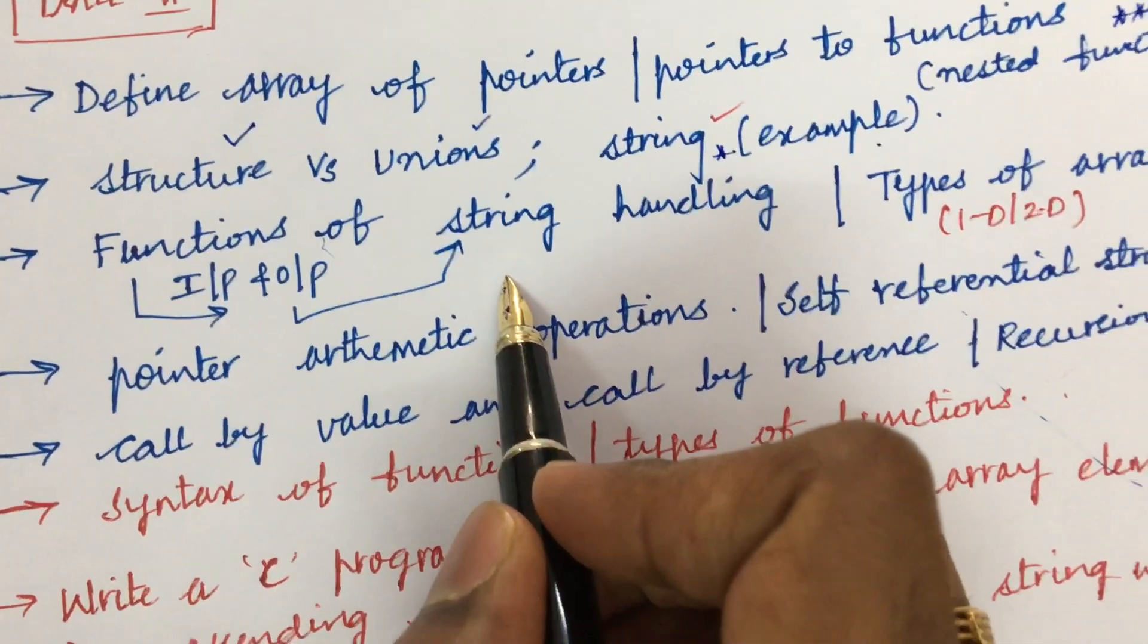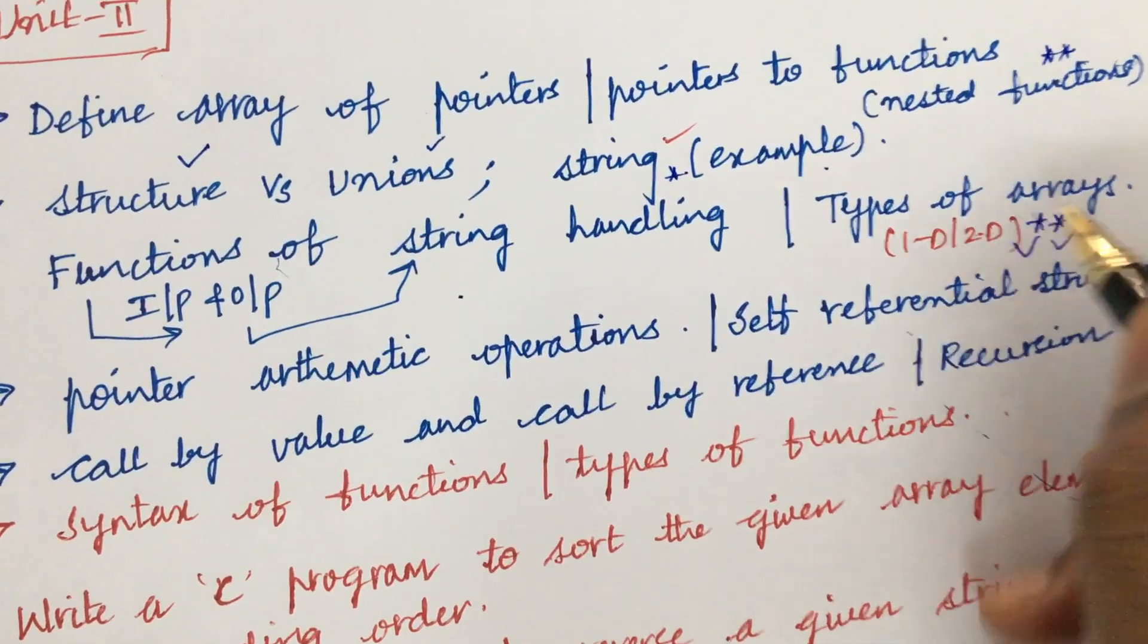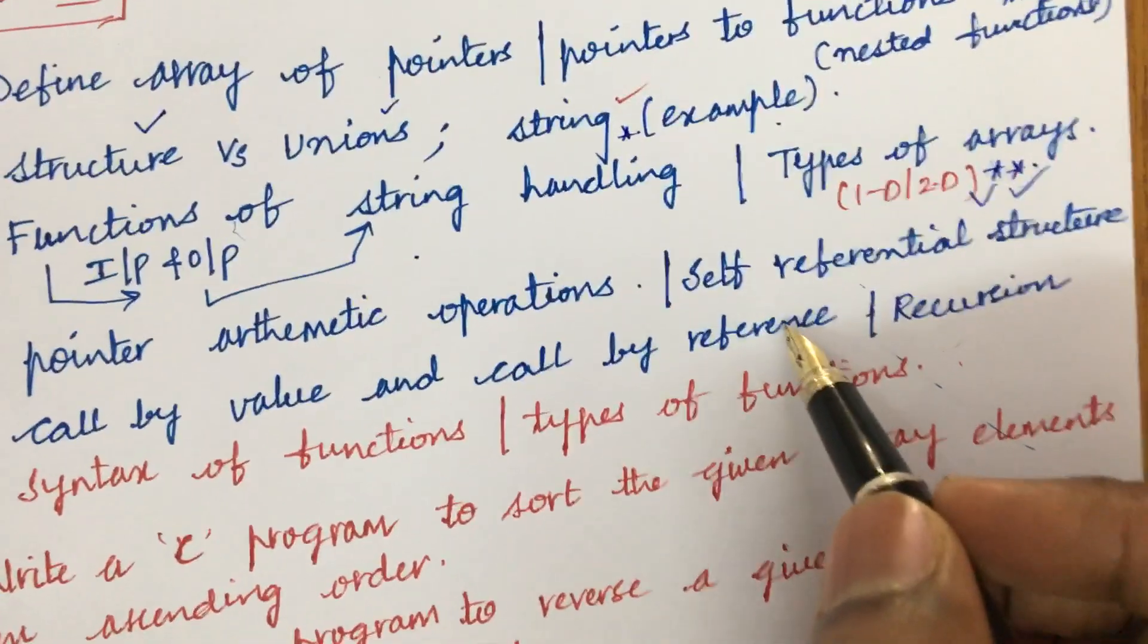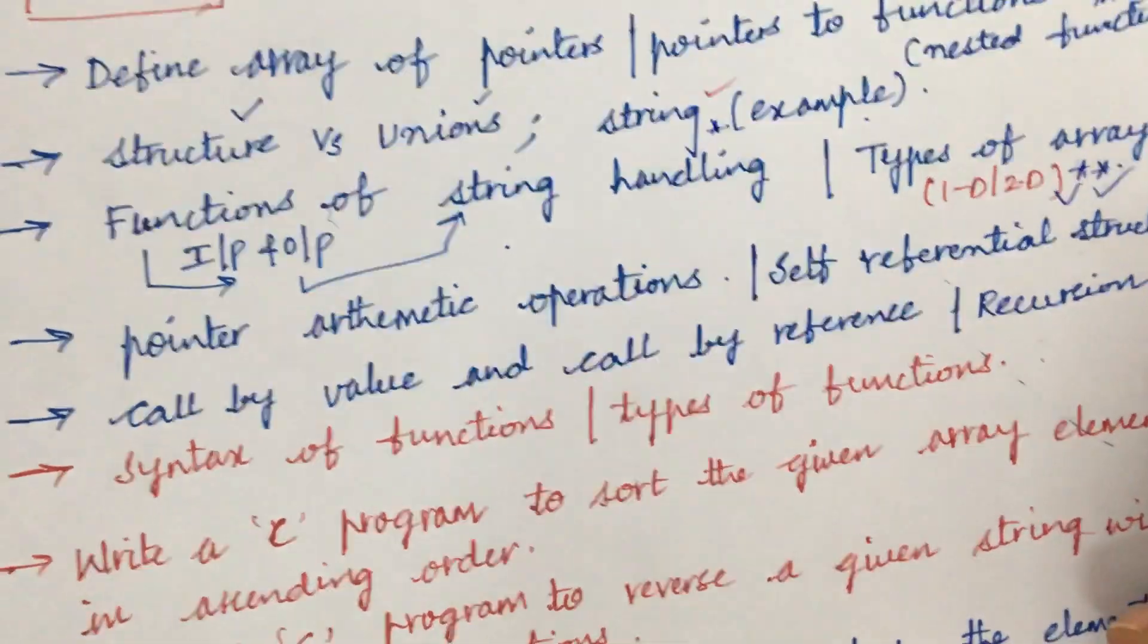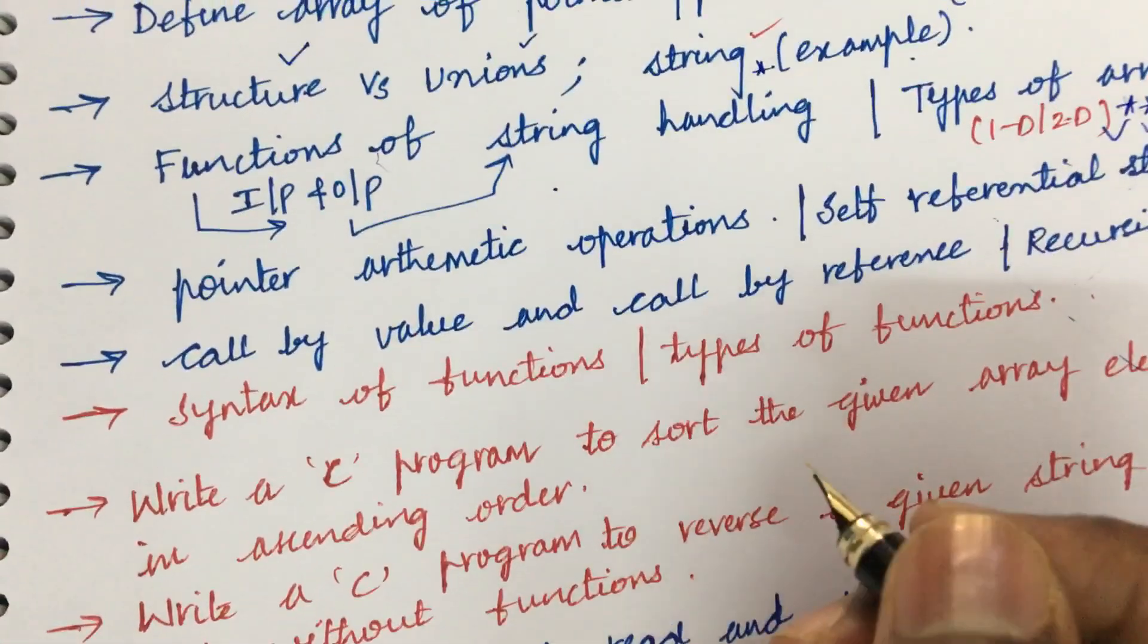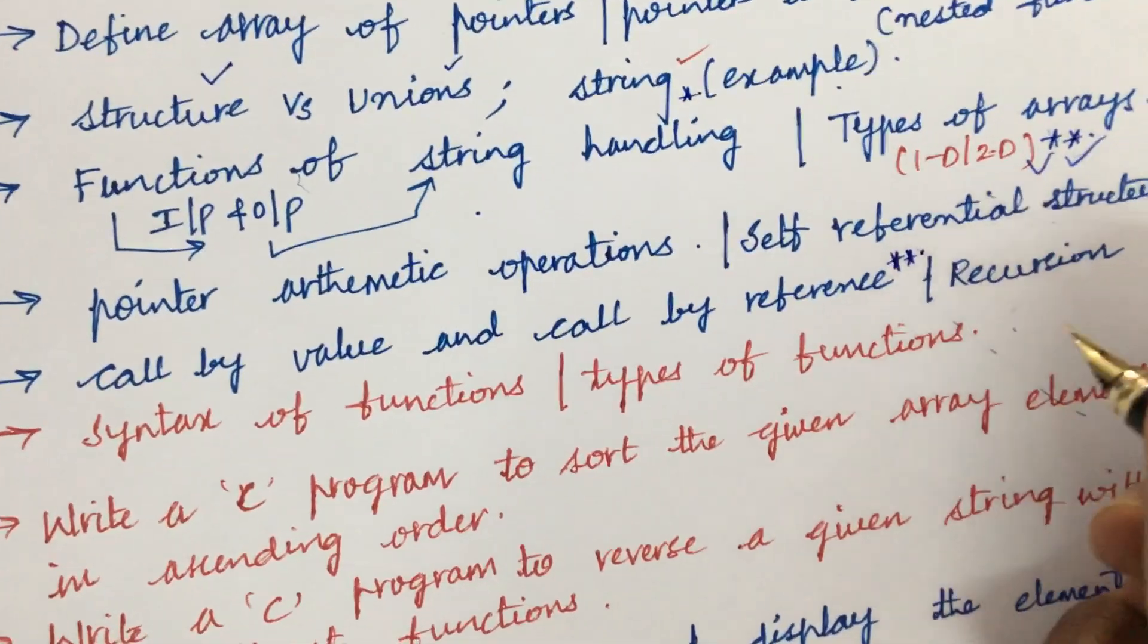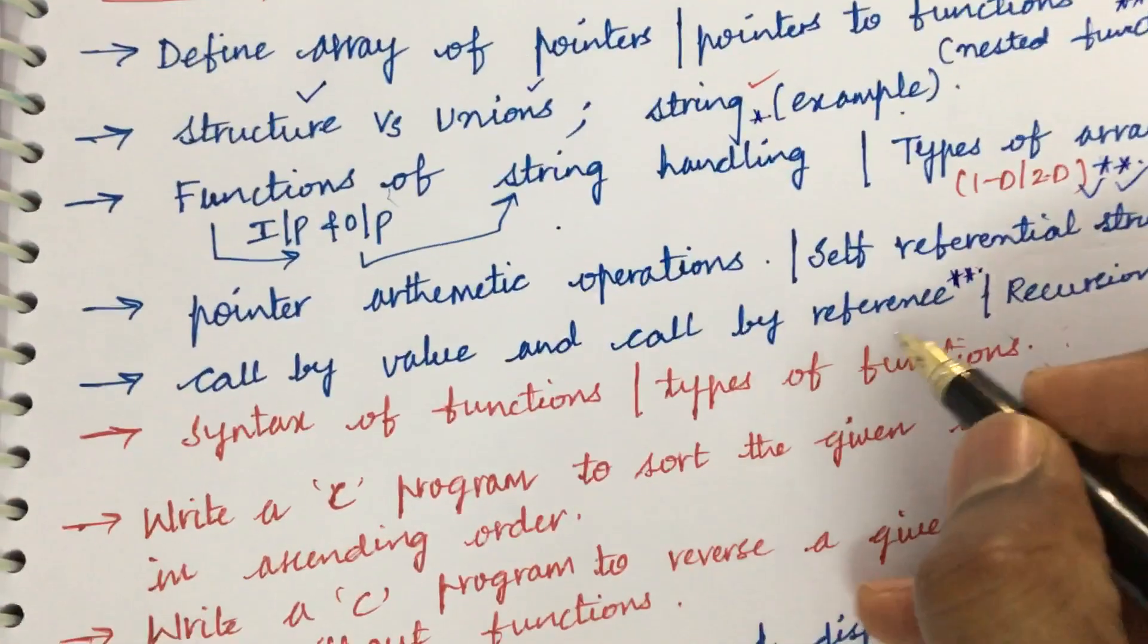Examples and functions of string handling and input-output functions of a string is very important. Types of arrays and the 1D, 2D type is also very important and based on this a program will be asked. Pointer arithmetic operations as well as self-referential structure related to the structure - you need to be perfect with all the concepts. Call by value as well as call by reference is also asked several number of times and that is said to be a highlighted question and about the recursion, syntax of functions and types of functions.